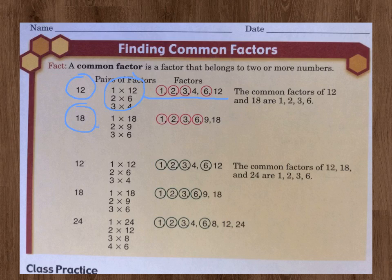Then with 18, they've done the same thing and showed the pairs of factors: 1 times 18, 2 times 9, and 3 times 6. And they've taken those numbers and wrote them in numerical order right there: 1, 2, 3, 6, 9, and 18.